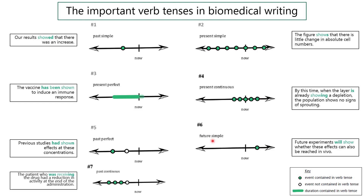The final example is the past continuous, which is confusing. For example: 'The patient who was receiving the drug had a reduction in activity at the end of the administration.' I would suggest you don't worry about this too much — it's very similar to the past perfect and you can probably exchange it in most cases. In daily life: 'I was riding my bike to work when I saw a big traffic accident.' This tense is rare.